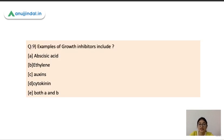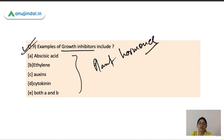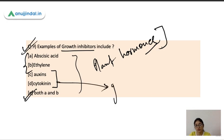The next question is examples of growth inhibitors include what? Abscisic acid, ethylene, auxin, cytokinin and both A and B. These are basically plant hormones and their specific functions. Abscisic acid and ethylene both of these are growth inhibitors. This will inhibit the growth of the plant while auxins and cytokinin are the growth promoters.